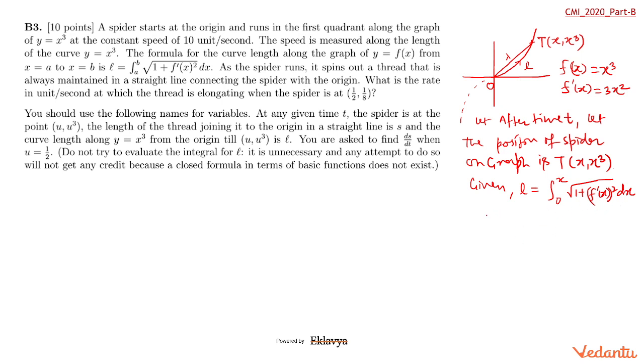Now to find dL by dt - with respect to time, this is given as 10 units per second. What does it mean? It's called Newton-Leibniz rule, the fundamental principle of calculus. We can write dL by dt as dL by dx times dx by dt equals 10. And what is dL by dx? It will be under root of 1 plus f dash x whole square, which is 1 plus 9x raised to the power 4.